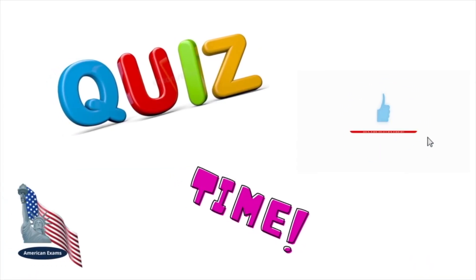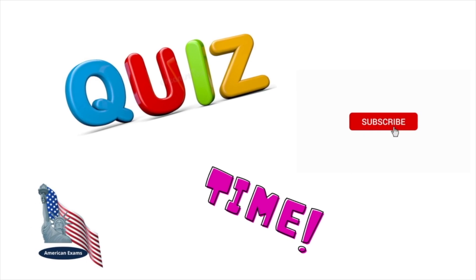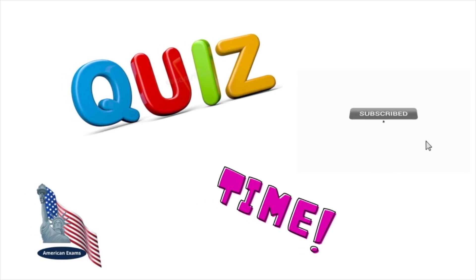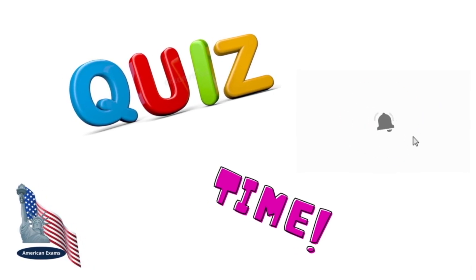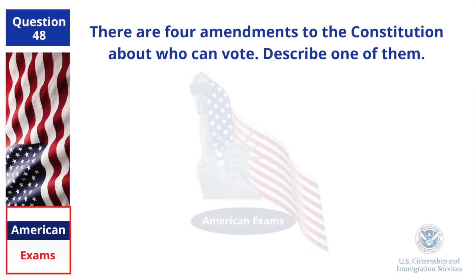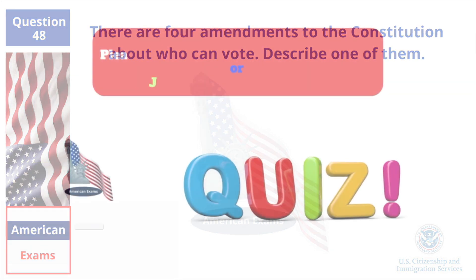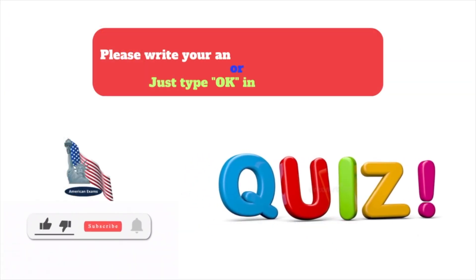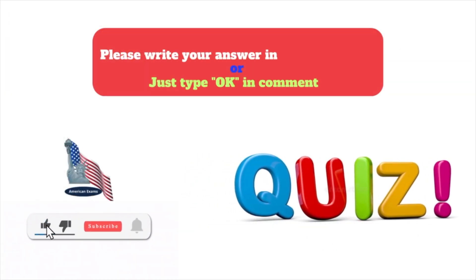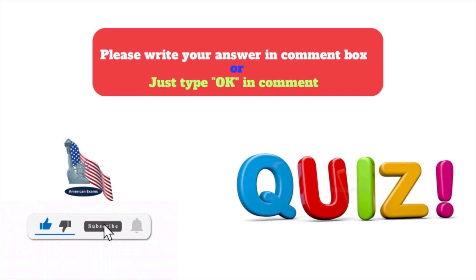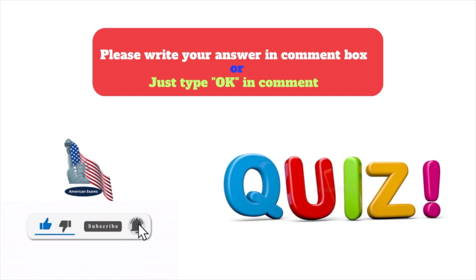Dear learner, let's have a quiz for you. Please write your answer in the comment box. There are four amendments to the Constitution about who can vote. Describe one of them.